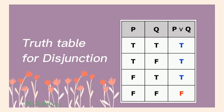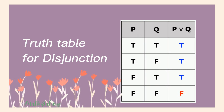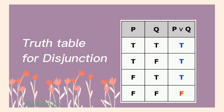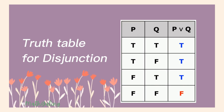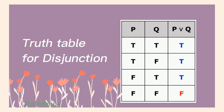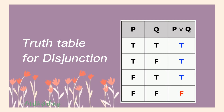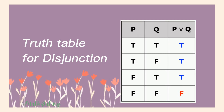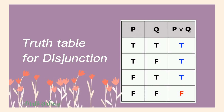Truth Table for Disjunction. This uses the logical operator OR. Case 1: If the first proposition is true and the second proposition is also true, and they are joined by OR, the truth value is true. Second, if the first is true and the second is false, the truth value is true. Third, if the first is false and the second is true, the truth value is true. Fourth, if the first is false and the second is also false, the truth value is false.